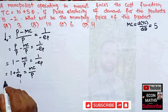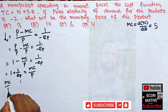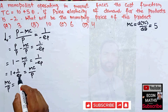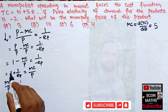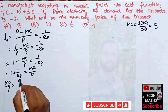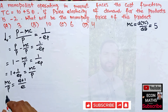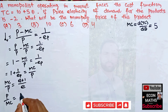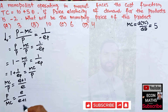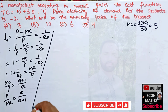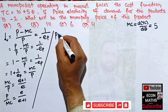So MC/P = (E + 1)/E. Reciprocating both sides, P/MC = E/(E + 1), and therefore the monopoly price P = MC × E/(E + 1).